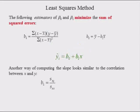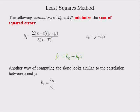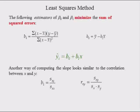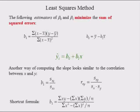Another way of computing slope b1 looks similar to the correlation between x and y. b1 equals the sample covariance of x and y, denoted s_xy, divided by the variance of x, denoted s_xx. The linear correlation between x and y equals the covariance of x and y divided by the product of the standard deviations of x and y. A third way to compute slope b1 is the shortcut method.